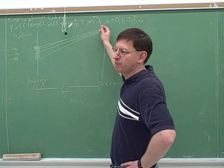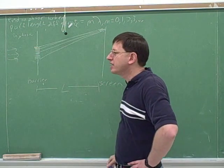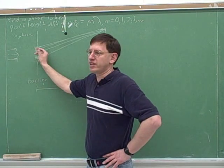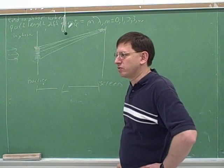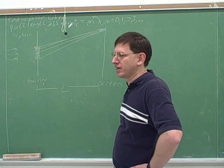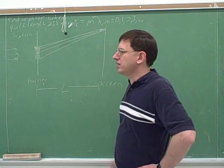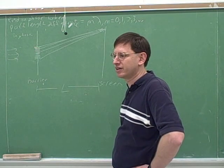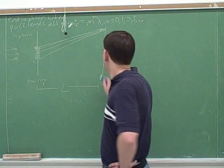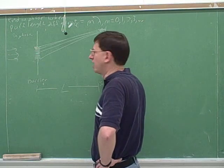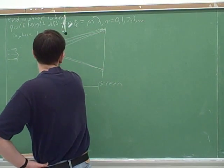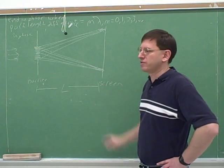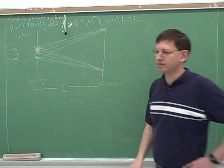I'm just focusing on one point — what will happen at this one point? The point I'm trying to make is each point on the screen will receive a beam of light from every single slit. And therefore, each point on the screen can be experiencing constructive or destructive interference. So this point will also receive many beams of light, and we have to figure out whether the beams are interfering constructively or destructively.